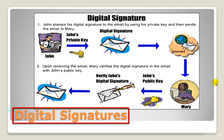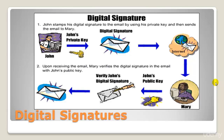After that we have the digital signature — the final primitive defined here. The basic idea is that a signature on a message can be created by only one person but can be checked by anyone. It performs in the electronic world the function that ordinary signatures do on paper. Signature schemes can be deterministic or randomized: in deterministic schemes, computing a signature on a message always gives the same result; in randomized schemes, it gives a different result each time — more like a handwritten signature where no two are ever alike, but the bank has a means of deciding whether a given signature is genuine or forged.